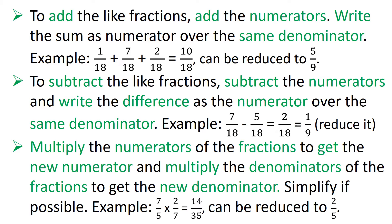To multiply fractions, multiply the numerators to get the new numerator and multiply the denominators to get the new denominator. Simplify if possible. For example: 7 upon 5 into 2 upon 7 gives 14 upon 35. Both 14 and 35 are in the table of 7, so this reduces to 2 upon 5.